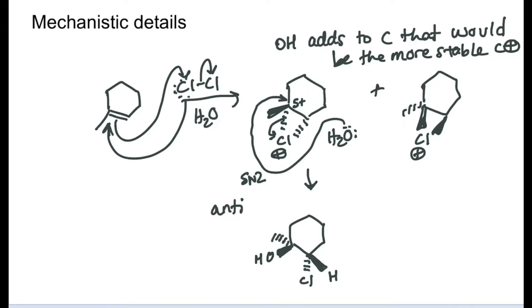We have this as one product, whereas on the other intermediate that I drew, we could have had water attack here and release the three-membered ring. This is SN2, so we're going to get inversion at the site of SN2.